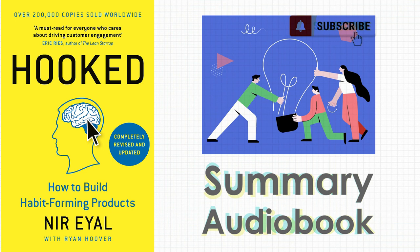A variable reward system keeps users engaged. Once the user completes an action, they expect a reward — the third step of the Hook Model. Research by Stanford professor Brian Knutson shows the brain responds to rewards, but our biggest motivator isn't the pleasure of receiving the prize — it's the relief of fulfilling a craving. The essential quality of an effective reward is variability. Novelty brings attention to mundane things and boosts motivation. There are three types of variable rewards: the tribe, the hunt, and the self.